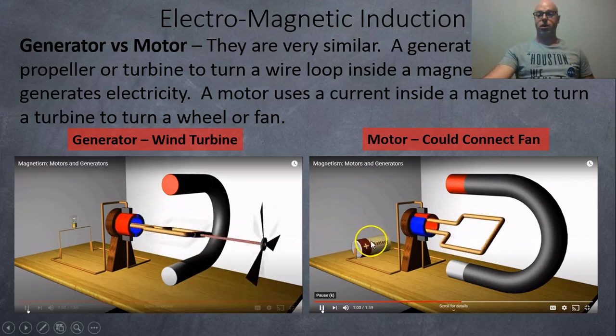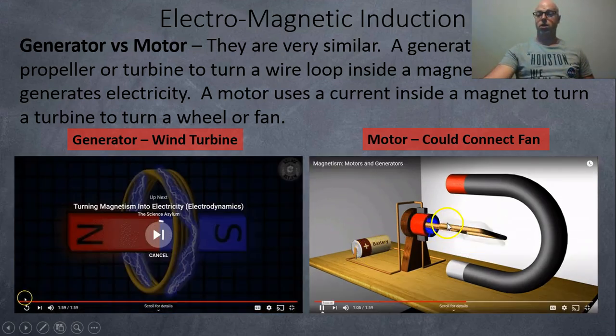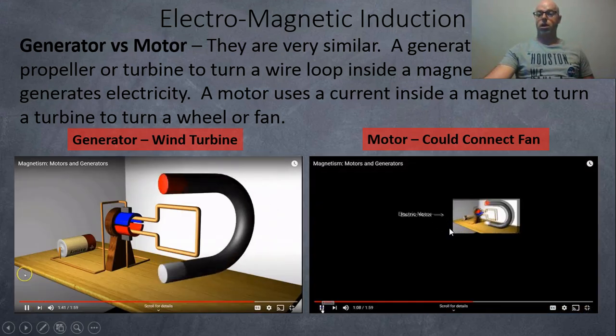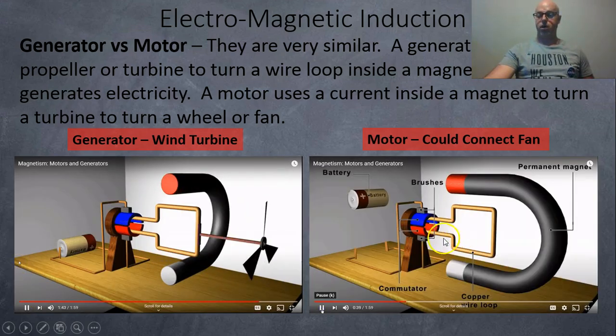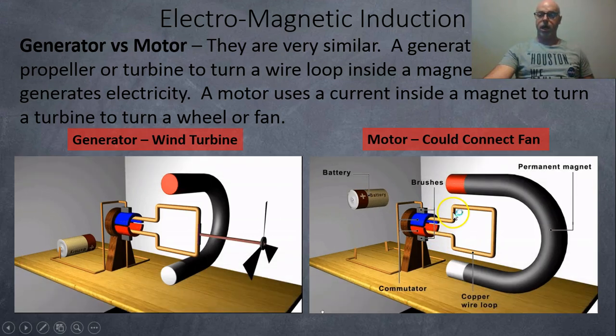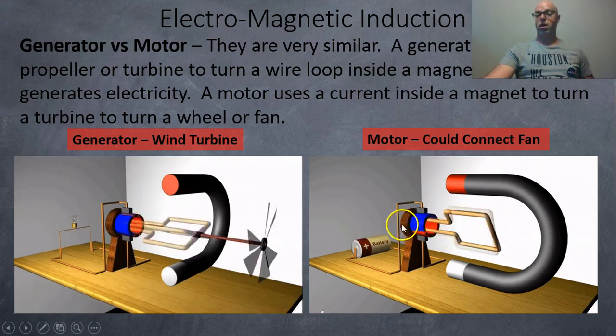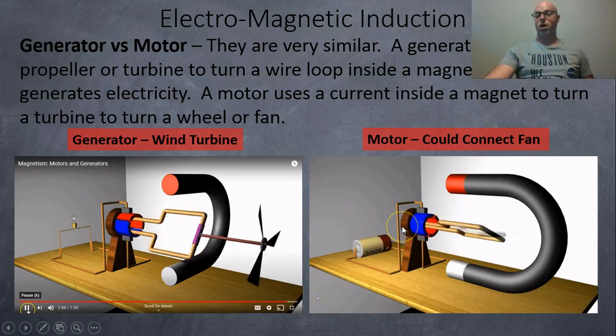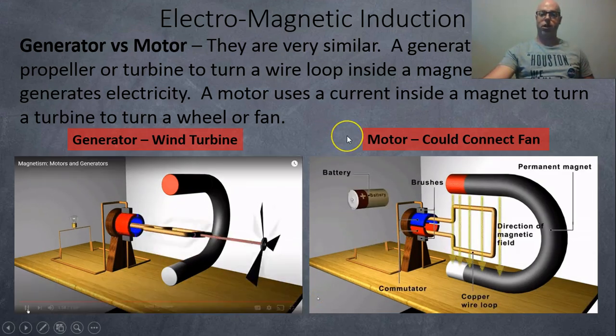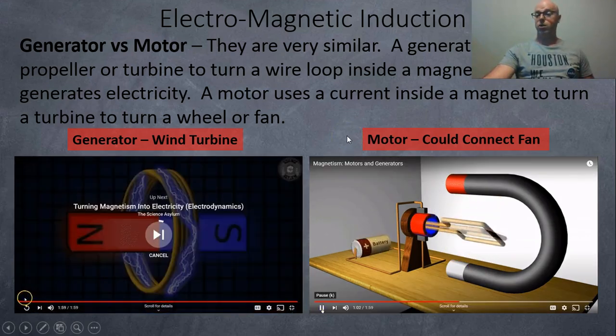Well, motors are the opposite. You've got a battery or source, turns the coil, and then you could hook up a wheel or a fan blade over here to make the air move or to turn the car wheel. So it's kind of the opposite of each other, but basically using the same materials.